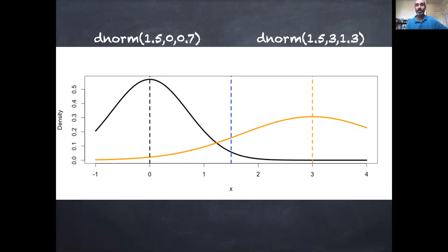The fact that we can plug in numbers into R and get probability density values back. So let's say I've drawn two curves, one centered at 0 with a standard deviation of 0.7, drawing this curve here in black, and the other one centered on 3 with a standard deviation of 1.3, drawing this curve in yellow.